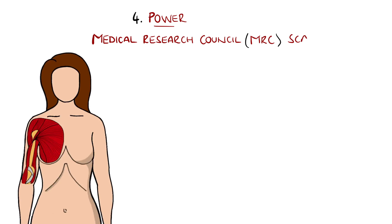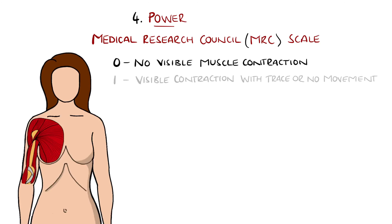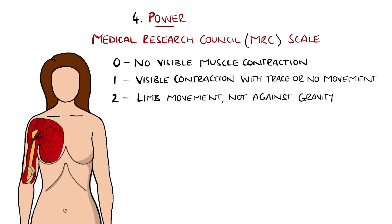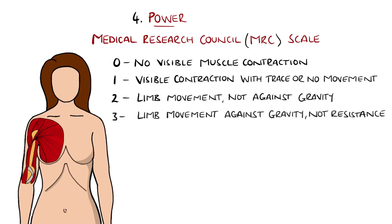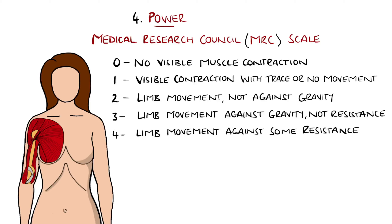Next is power, assessed using the MRC scale from 0 to 5. 0 is no visible muscle contraction. 1 has visible contraction but no or trace movement. 2 is limb movement but not against gravity. 3 has movement against gravity but not resistance. 4 has movement against at least some resistance. And 5 is full strength. As power is assessed, a particular myotome is tested and should be compared with the other side.